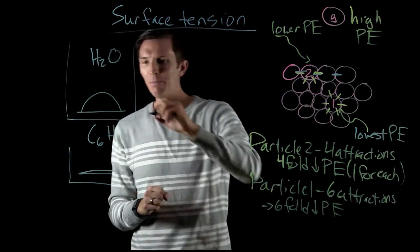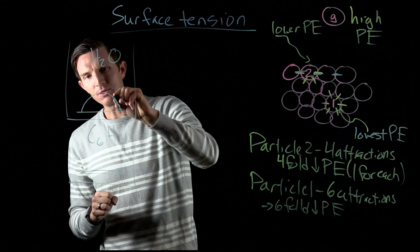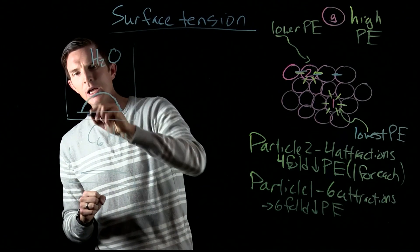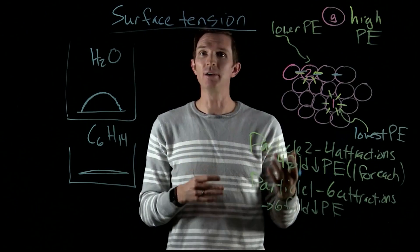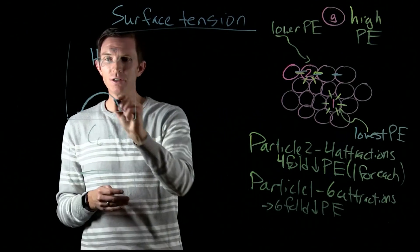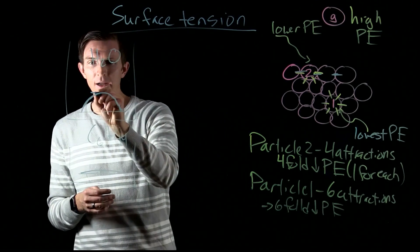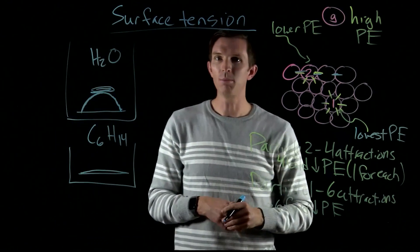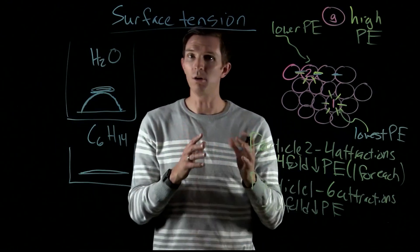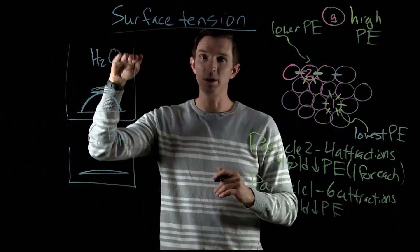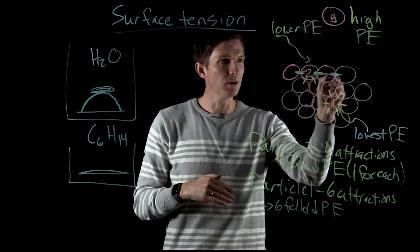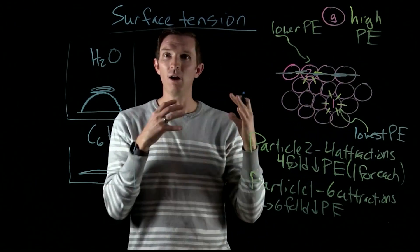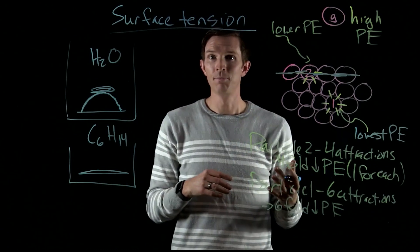Forming a sphere minimizes the number of particles sitting on the surface and maximizes those in the bulk. As that happens, the particles on the surface are really strongly attracted to each other, giving us a high surface tension. You can actually take a paper clip and put it on top of water — if it's a small paper clip — and it'll sit there because of the attractions between particles on the surface causing surface tension.